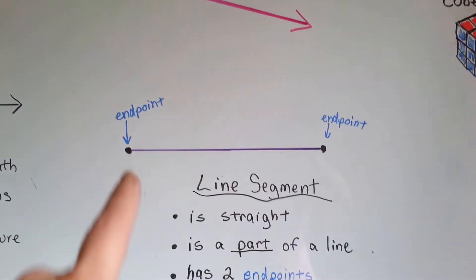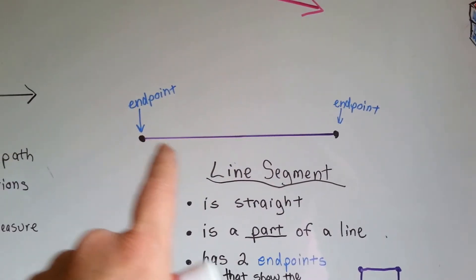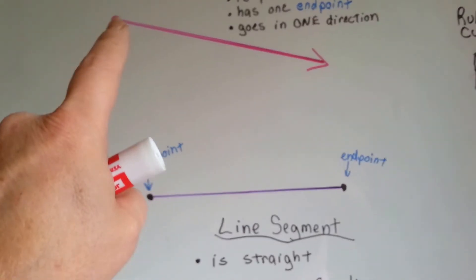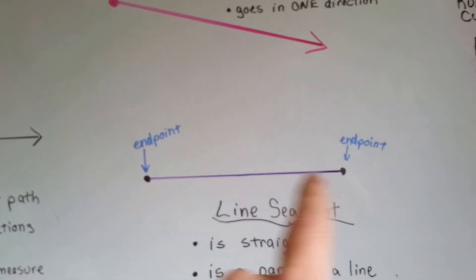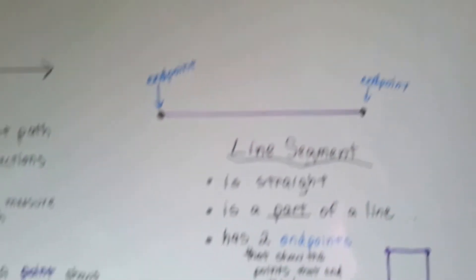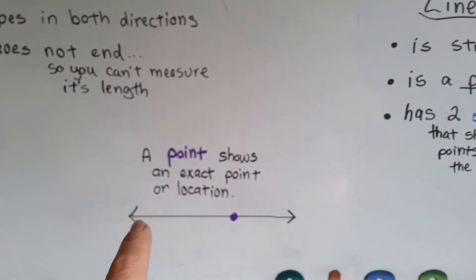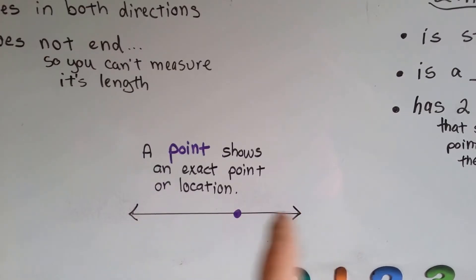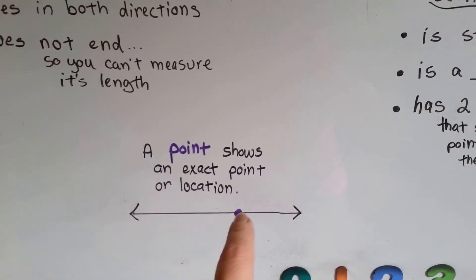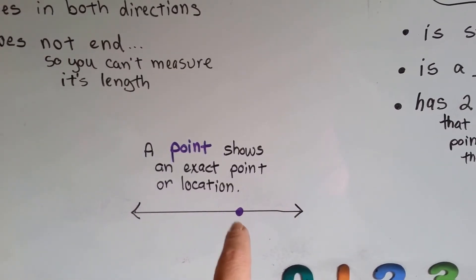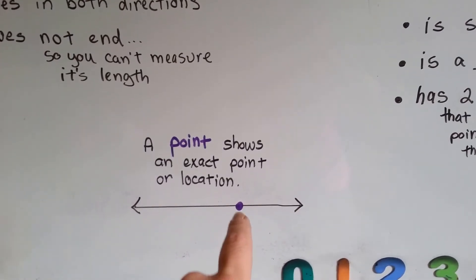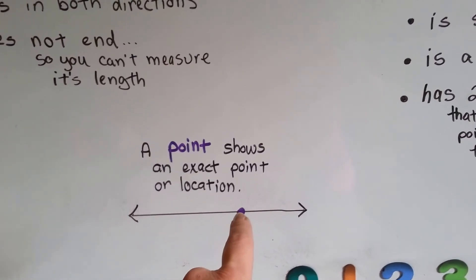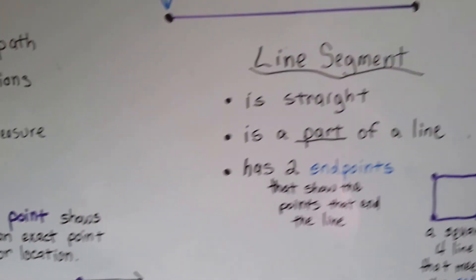End points are these little dots on the ends showing you where it ends. A point shows an exact location or point on a line. So that would be a point on a line. If we were saying I want to be right there, we would draw the little circle and put a point there.